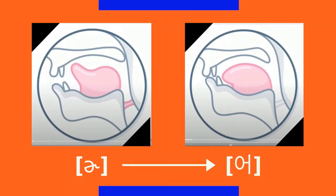Okay, now pronounce 'forever,' and stay in that last position, and gently relax your tongue. Don't change the shape of your mouth or lips — simply put the tip of your tongue down. Then, voila! There it is. The Korean ㅓ.